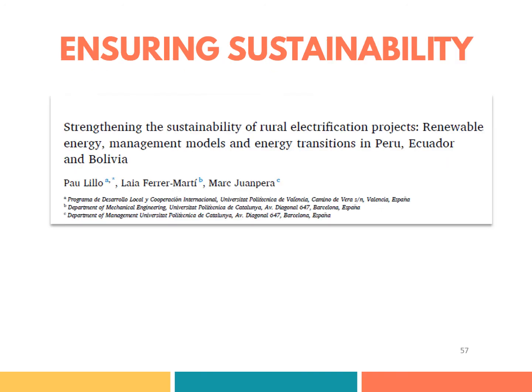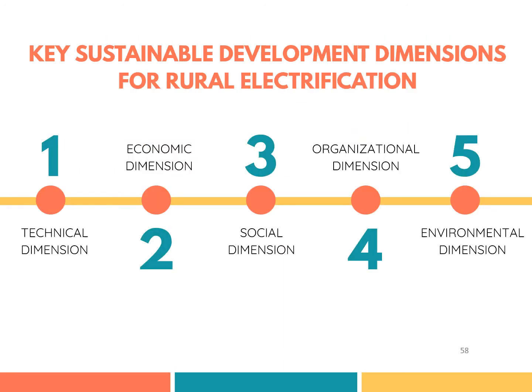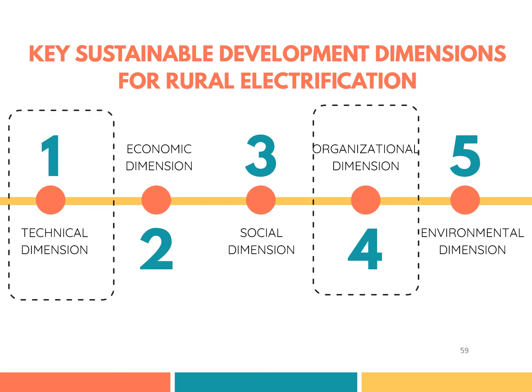In the paper reviewed, written by Paulilio and company, these management systems were evaluated based on five sustainability dimensions: technical, economic, social, organizational, and environmental. Earlier, we discussed the Sustainable Development Goals and how its three major pillars ensure energy access for all. The addition of a technical and organizational dimension, which highlights system quality and local involvement, strengthens the sustainability of these projects.